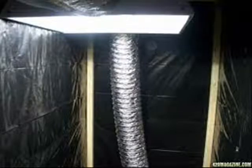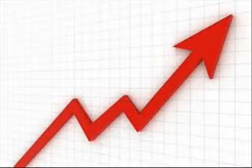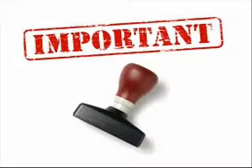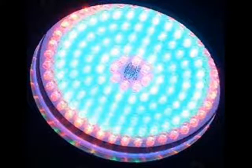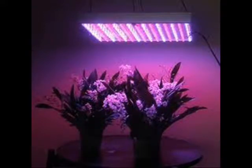High intensity discharge bulbs give off the most amount of light, however they cost a lot in electrical use per month and also give off heat which, if not handled properly, can damage plants. LED lights are the newest type of light on the market — they're very good as far as heat and electrical costs go, and also produce a good amount of light, however they are by far the most expensive type of light.